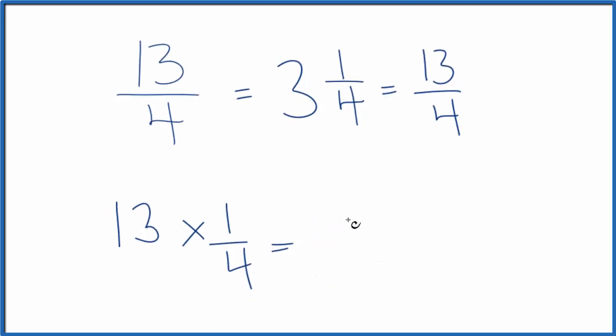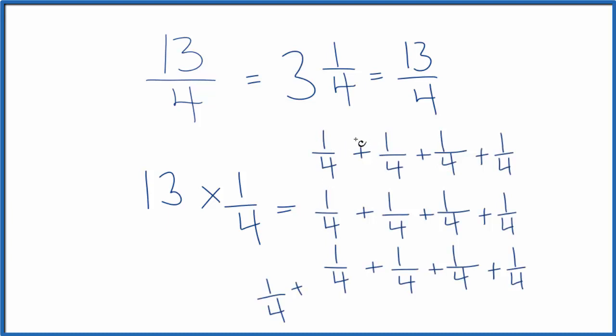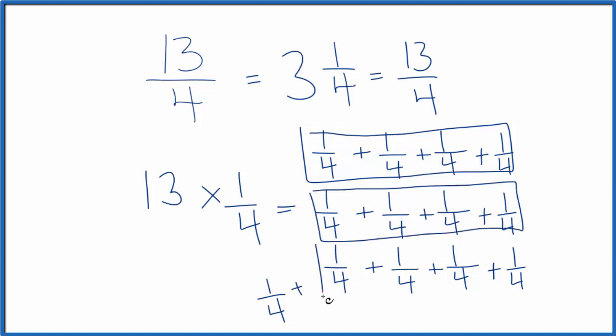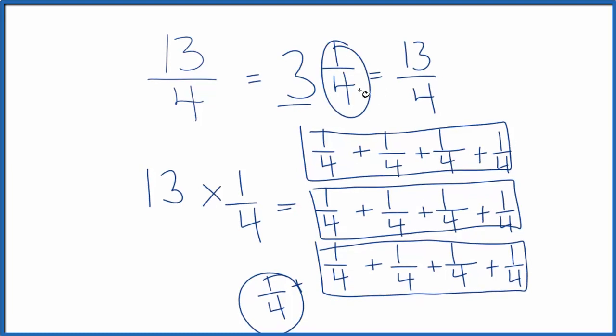That means we have 13 one-fourths. And so 4 one-fourths, that's 4 fourths. So all of this here, that's equal to 1. Same here. And then down here, that's equal to 1. 1 plus 1 plus 1, that gives us the 3. And then we have 1 fourth left over. That's this 1 fourth right here.